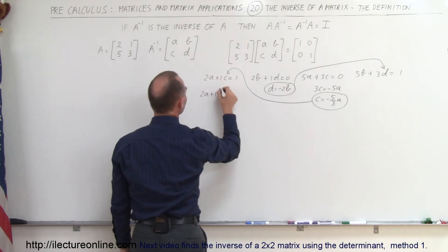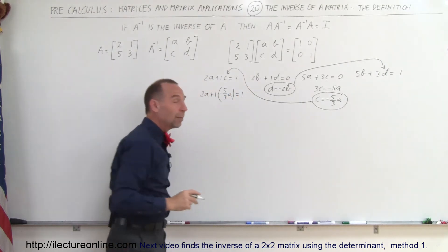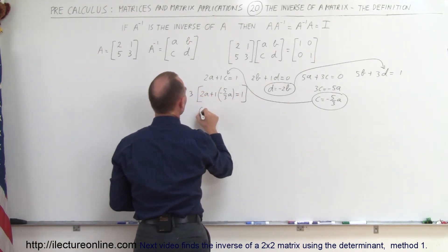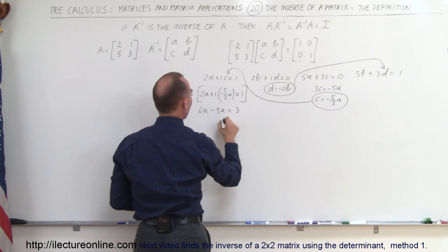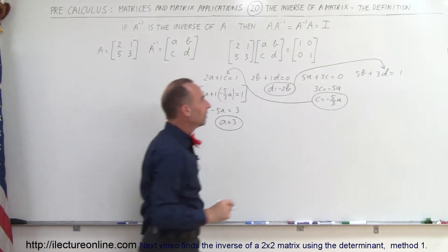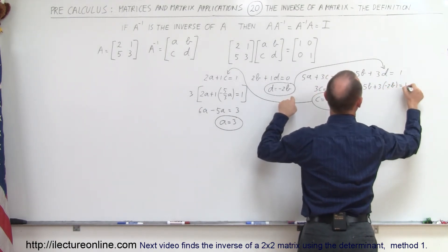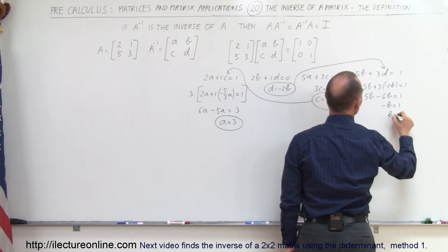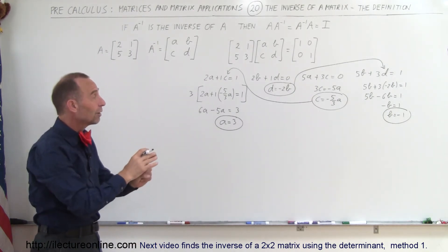Here we end up with 2A plus 1 times C. Instead of C I can write minus 5 over 3 times A, and that equals 1. I'm going to multiply both sides of the equation by 3, giving us 6A minus 5A equals 3, so therefore A equals 3. Now I know one of our four unknowns. On the other side I can write 5B plus 3 times minus 2B equals 1, so 5B minus 6B equals 1, giving minus B equals 1, or B equals negative 1. So now I have the second of the four unknowns.